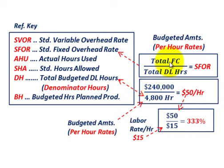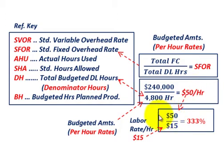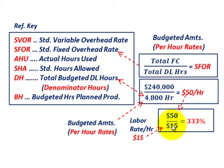For the fixed overhead rate, we take total fixed costs estimated for the period and divide by total direct labor hours estimated. In this case, total fixed cost is $240,000 and total direct labor hours are 4,800, giving us $50 per hour for our fixed overhead rate. You can also express this as a percentage of the standard labor rate: $50 divided by $15 per hour equals 333% — meaning for every direct labor hour, 333% is included as fixed overhead cost.